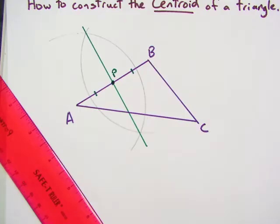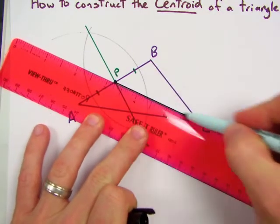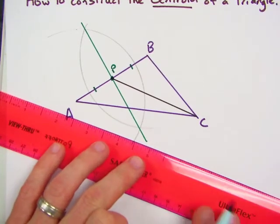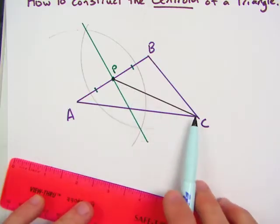So now when we look at this, here is one median of the triangle. So we know the centroid has to lie somewhere on this median.